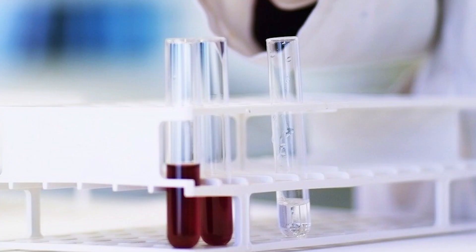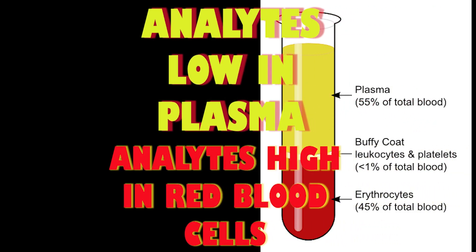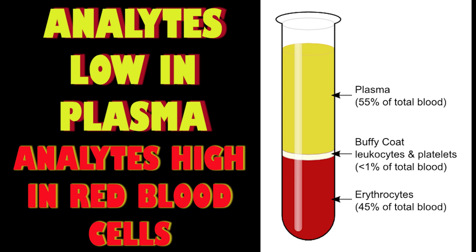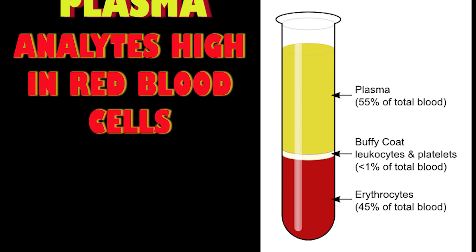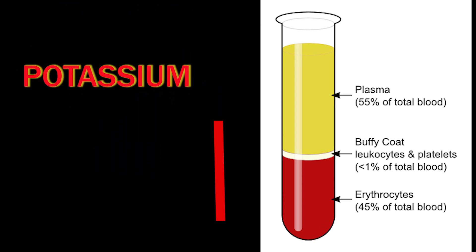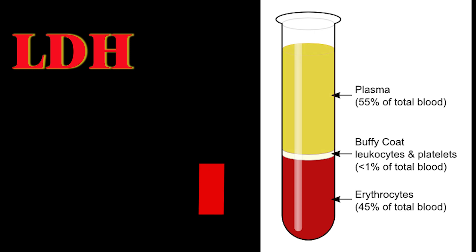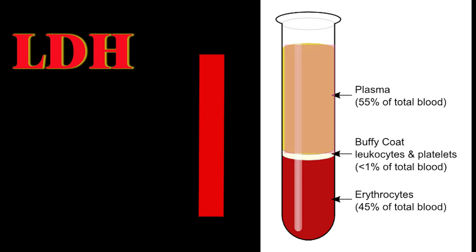The degree of hemolysis may vary according to the amount of RBC rupture. What are the interferences in lab results because of hemolysis? Some analytes are high in RBCs compared to plasma. These test results are increased when the hemolyzed RBCs release these analytes. For example, potassium level is 20 times higher in RBCs compared to plasma or serum, and LDH is about 150 times more in RBCs than plasma or serum. These reports will not be accurate when tests are run on a hemolyzed sample.